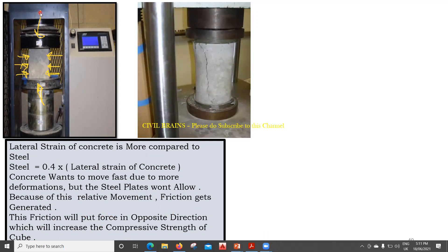Since we wanted the load to come only in the y direction, but throughout the process we are getting confinement from the x direction as well. So this cube specimen, which was supposed to fail at a load of 50 kg, may now fail at 75 kg due to this effect in the x direction, because more confinement is given. That is why the cube gets more strength in comparison to the cylinder.